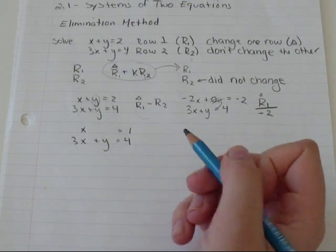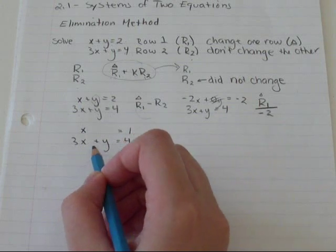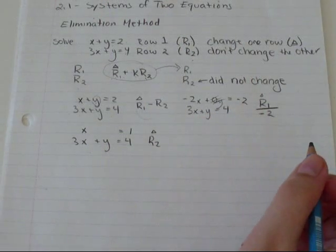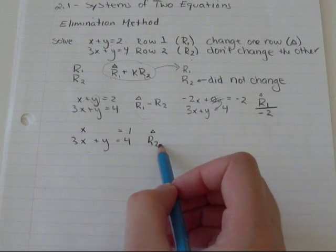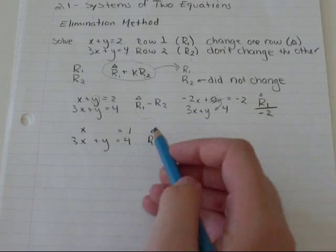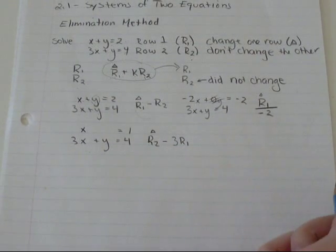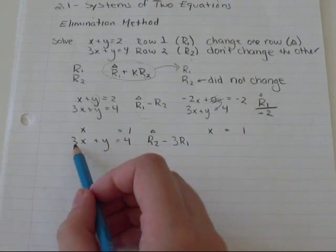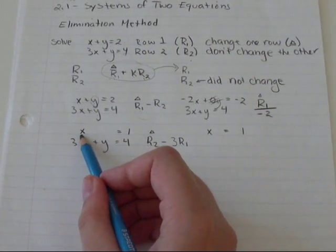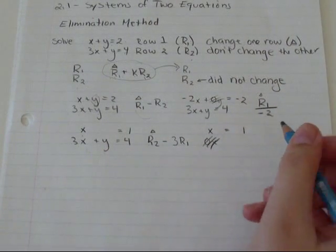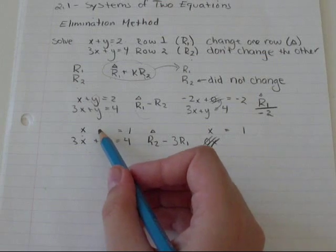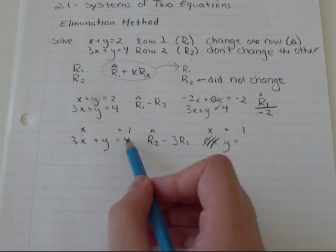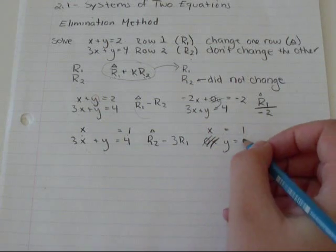So the next thing I'm going to do is I'm going to change row two so that hopefully I can get Y by itself. So how am I going to get Y by itself? Well, I'm going to change row two by going row two minus 3 times row one. I have 3X that I want to get rid of. So X equals 1 is the row I'm not changing. Row two, 3X minus 3 times X is 0X. Y minus 3 times 0Y is just Y equals 4 minus 3 times 1. So 4 minus 3 is just 1.